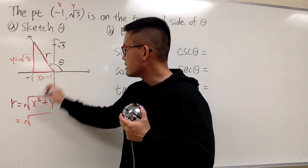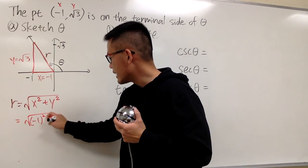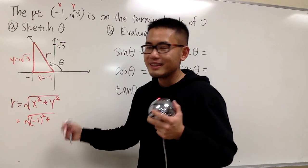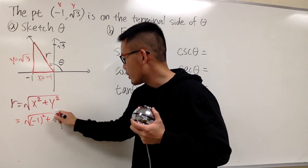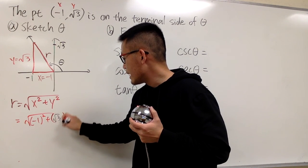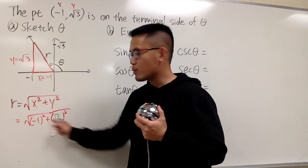Square root of x is negative 1, and square that plus, let's see carefully, y is square root of 3, so let me write it down, square root of 3 for y, and we square that. And everything is still inside the square root.